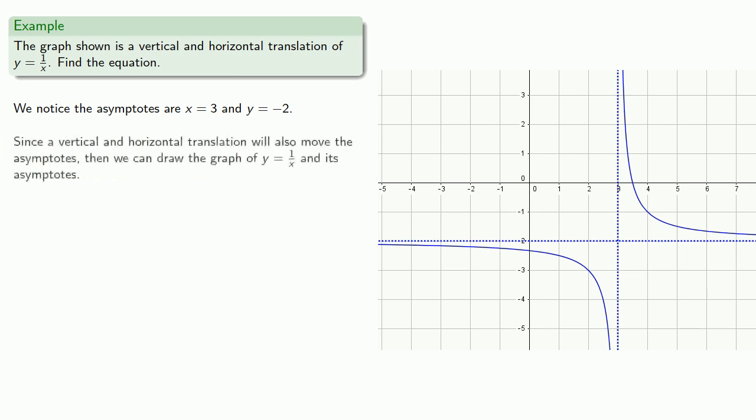Since a vertical and horizontal translation will also move the asymptotes, we can draw the graph of y = 1/x and its asymptotes.